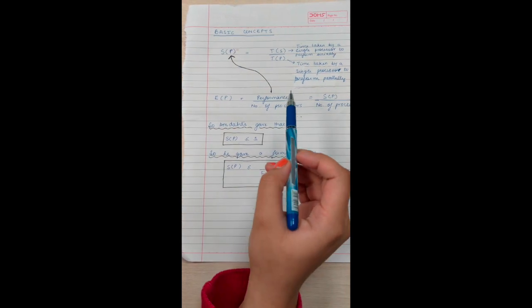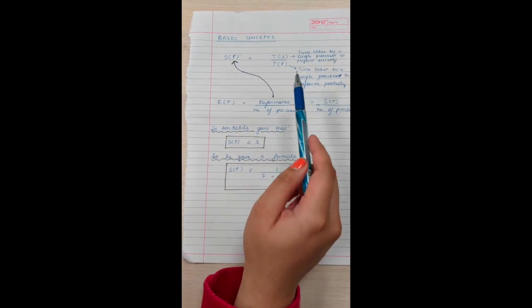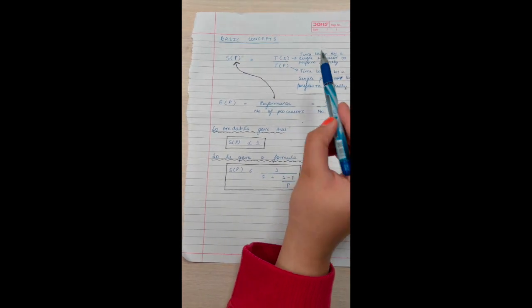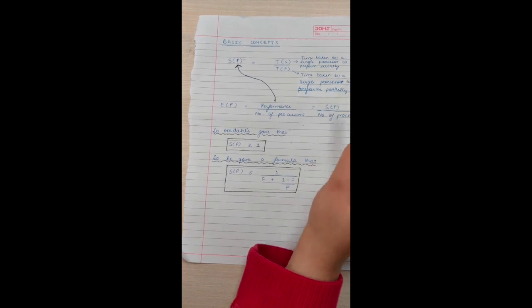Now, we will talk about the basic concepts of Amdahl's Law. First is speed up of parallel computing. It is the time taken by a single processor to perform serially divided by the time taken by a single processor to perform parallelly.